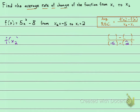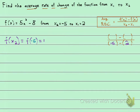Let's find f of x sub 2. x sub 2 is negative 5, so we're going to find f of negative 5. Plugging into the function, we have 5x squared minus 8, and everywhere we see an x, we put negative 5. Order of operations — we do the exponent first. Negative 5 squared is negative times negative, which gives us positive 25.